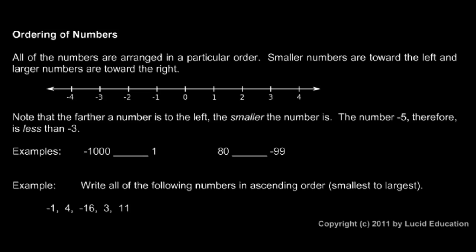All of the numbers on the number line are not just put there at random places, they're put there evenly spaced and in a particular order. Smaller numbers are toward the left, and larger numbers are toward the right.